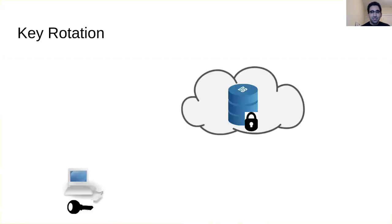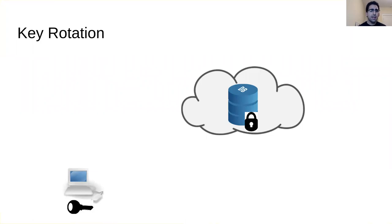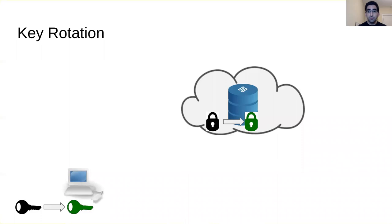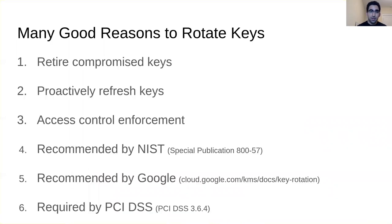The subject of this talk is key rotation. What is key rotation? Key rotation is when you have some data stored in a third-party cloud, encrypted under some key that you hold, and later you want to change that key so it's encrypted under a different key. The question is: how are you going to do this?